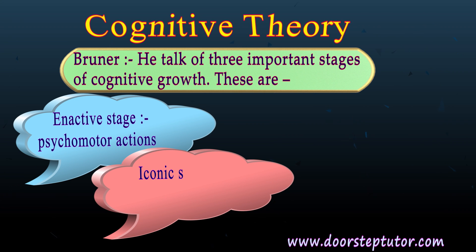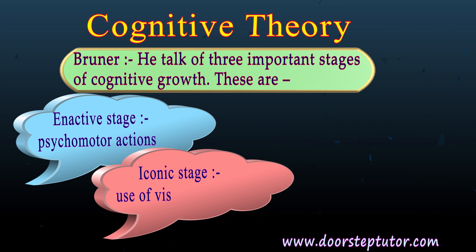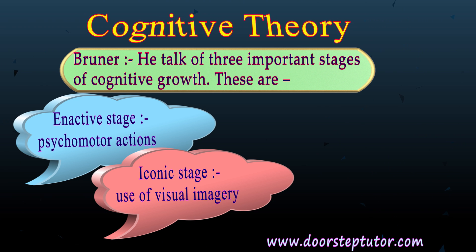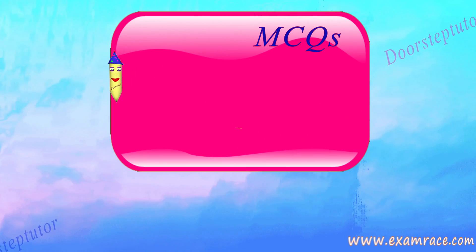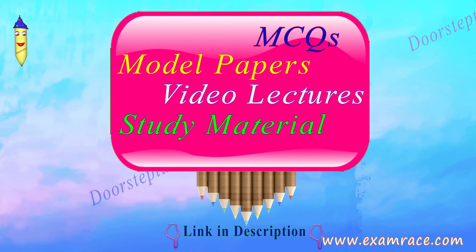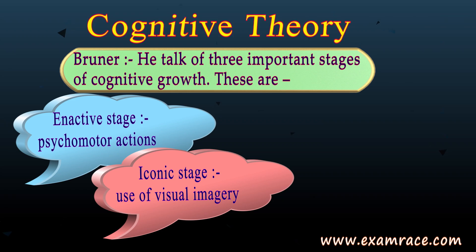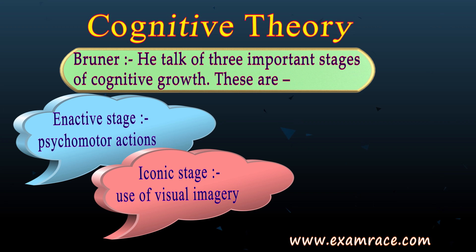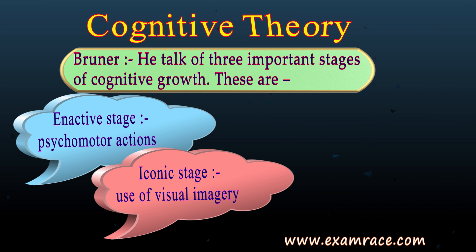The second stage is the iconic stage. Here the child uses visual imagery to represent the concrete world. The child learns to make pictures of flowers, houses and birds, which was not possible in the earlier stage.